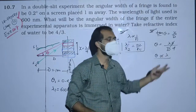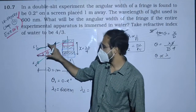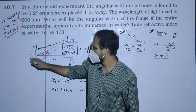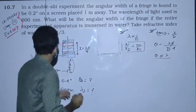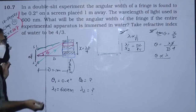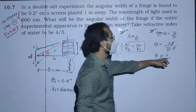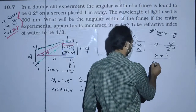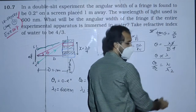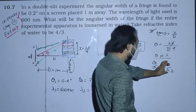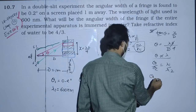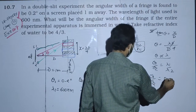The small d (slit separation) will not change when the whole apparatus is put into water — only the wavelength changes. So since theta is directly proportional to lambda, we get theta 1 upon theta 2 equals lambda 1 upon lambda 2.